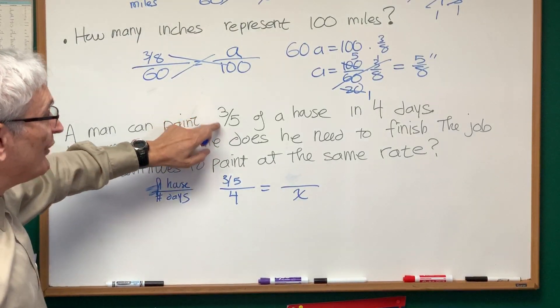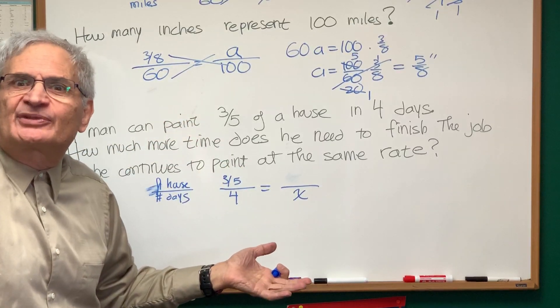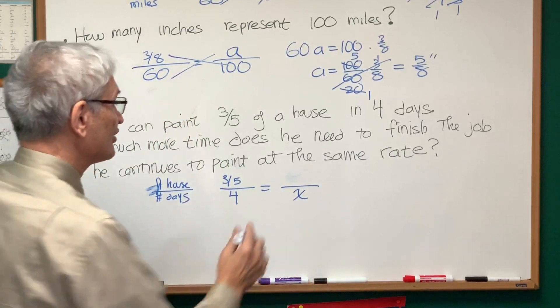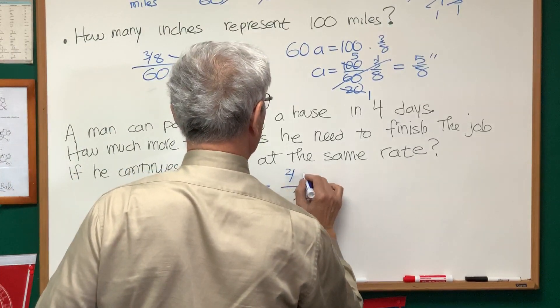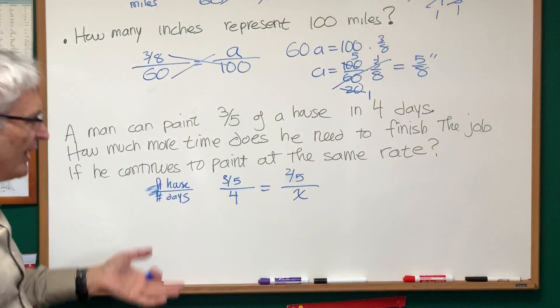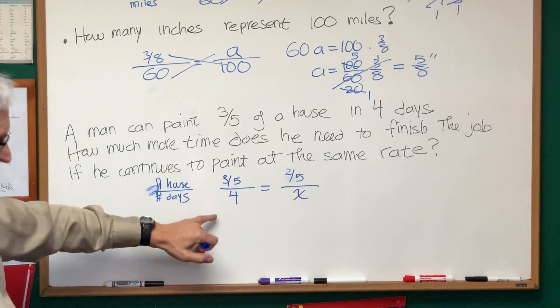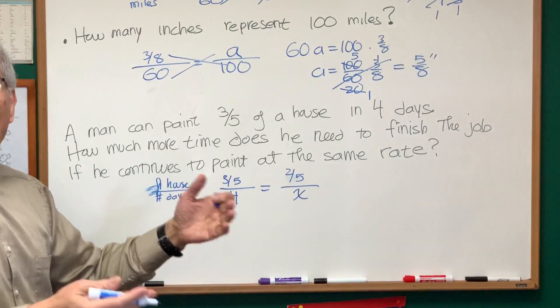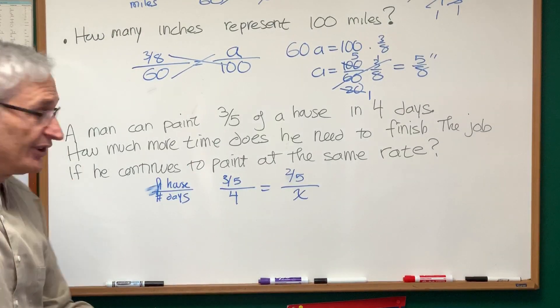Well, if he's finished three-fifths of the house, what fraction is left to paint? Two-fifths! So that's the fraction we're going to put up here. Two-fifths. And there is our proportion. Three-fifths is to four as two-fifths is to x. How much more time will he need to finish the house?